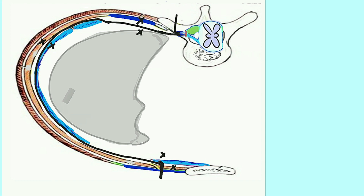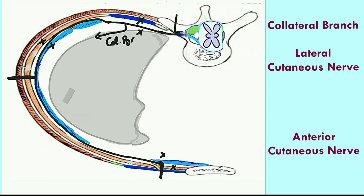Now I will show the branches of the intercostal nerve. First, the intercostal nerve gives a branch that runs alongside it in the intercostal space — this muscular branch is known as the collateral branch. When the intercostal nerve is in the lateral part of the body wall, it gives a cutaneous branch called the lateral cutaneous nerve, which divides into a posterior branch and an anterior branch to supply the skin of that segment.